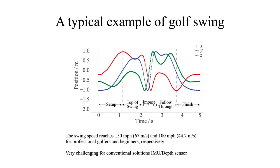Let's first look at an example. A typical golf swing consists of five stages: setup, top of swing, impact, follow through, and finish. The swing speed could reach 67 meters per second for professional golfers, and around 45 meters per second for beginners. This is very challenging for conventional solutions.